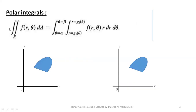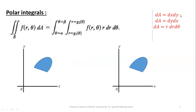Now we will learn what a polar integral looks like. On the left-hand side you can see the double integral over the region R of f(R, theta) dA. In polar integrals, a function is given in the form of R and theta for a given region, and dA is a small patch of area. In Cartesian coordinates we choose dA as dx dy or dy dx, but in polar coordinates we always choose dA as r dr d theta, so we have replaced dA as r dr d theta.